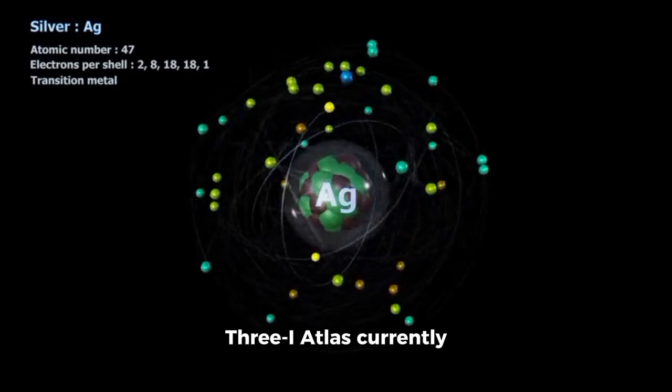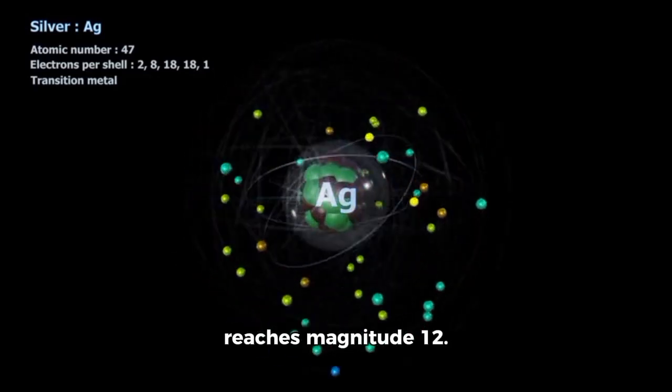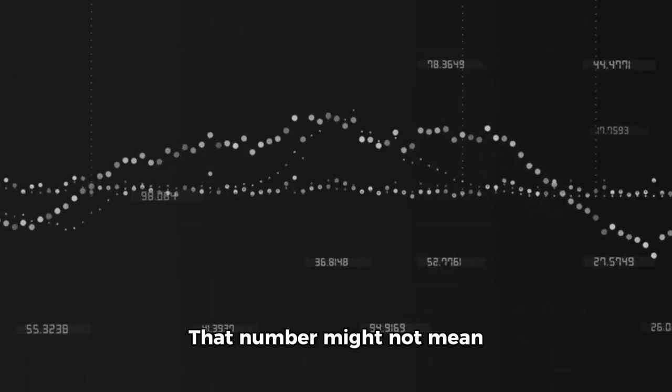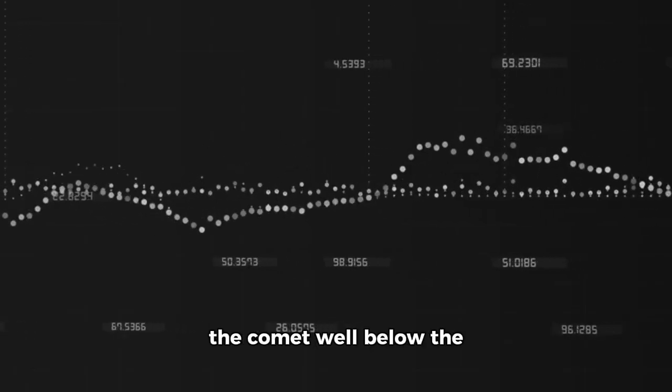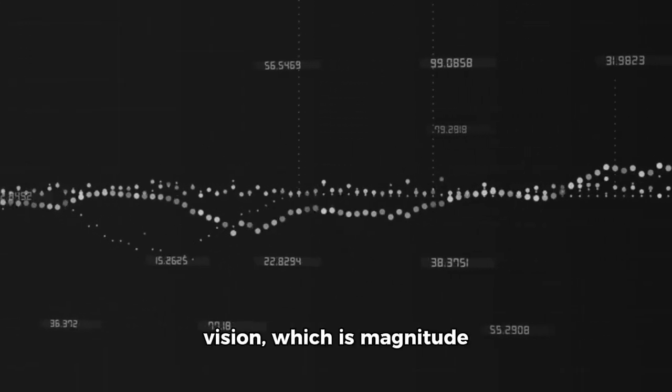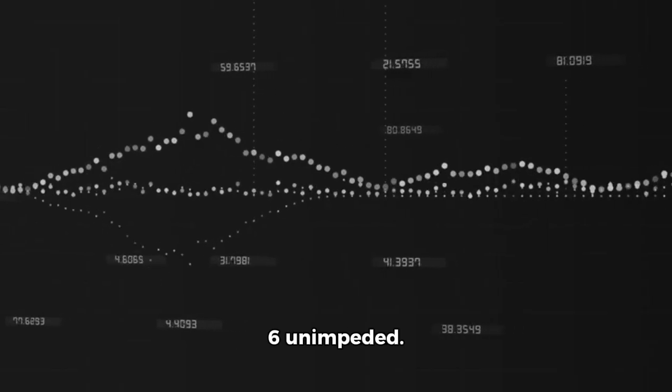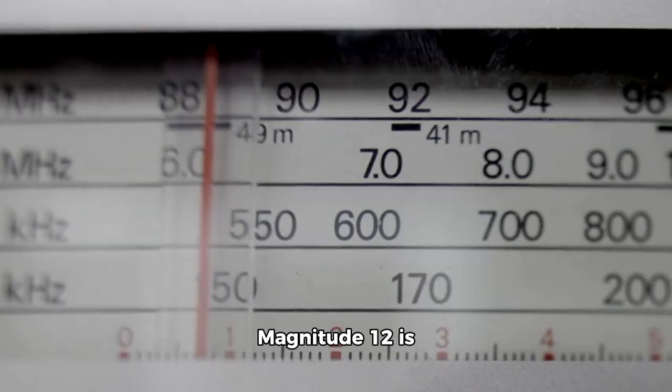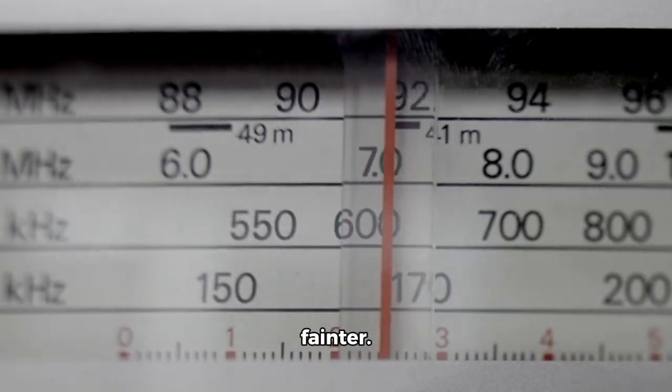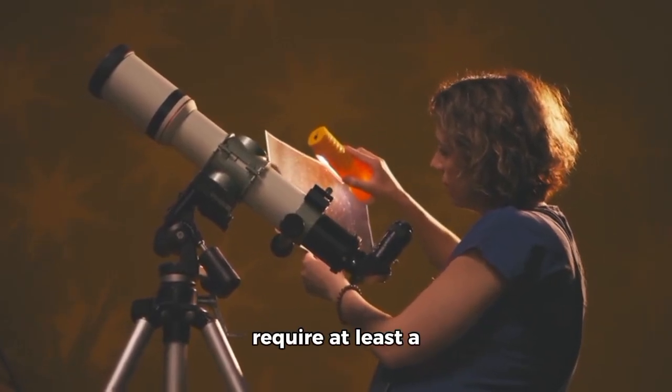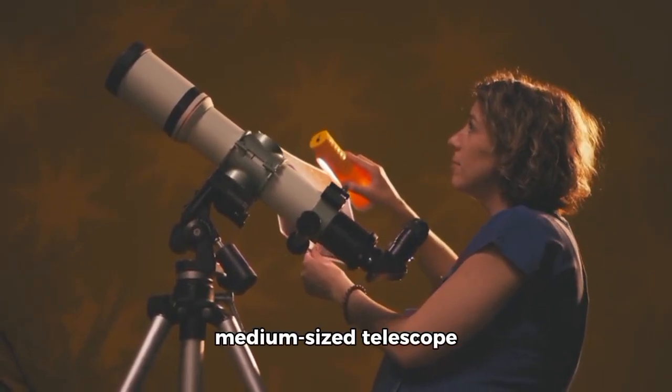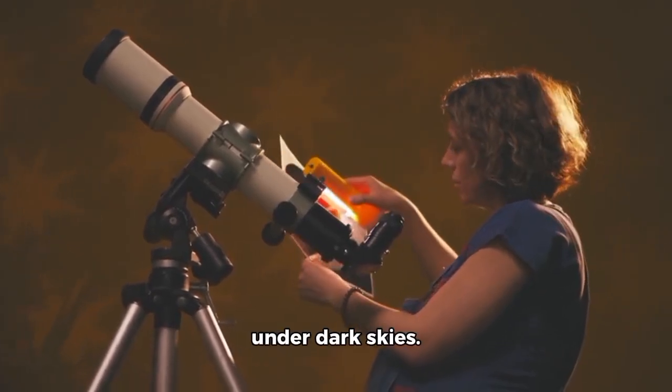On the brightness scale, 3i Atlas currently reaches magnitude 12. That number might not mean much at first glance, but specifically, it positions the comet well below the threshold for human vision, which is magnitude 6. Magnitude 12 is about 250 times fainter. Even experts in backyard observation require at least a medium-sized telescope to spot it, and only under dark skies.